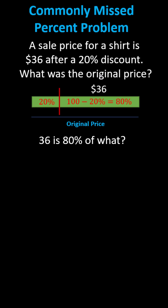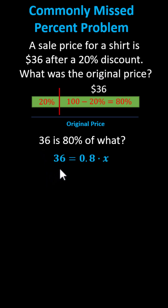Using a percent equation: 'is' means equals, 'of' means multiplication, 'what' represents the unknown, and we express the percentage as a decimal. This gives us the equation 36 equals 0.8 — which is 80% as a decimal — times x.